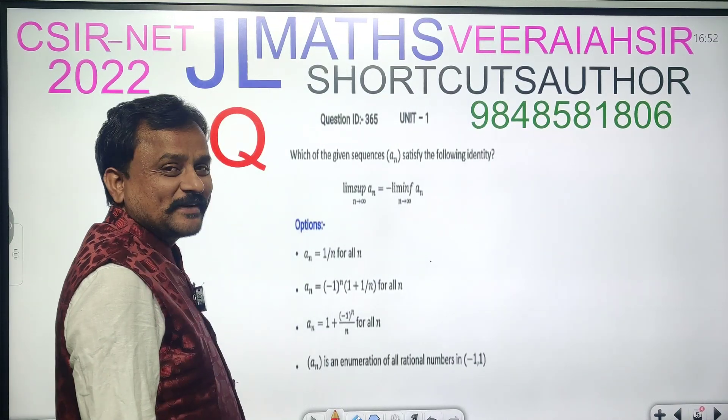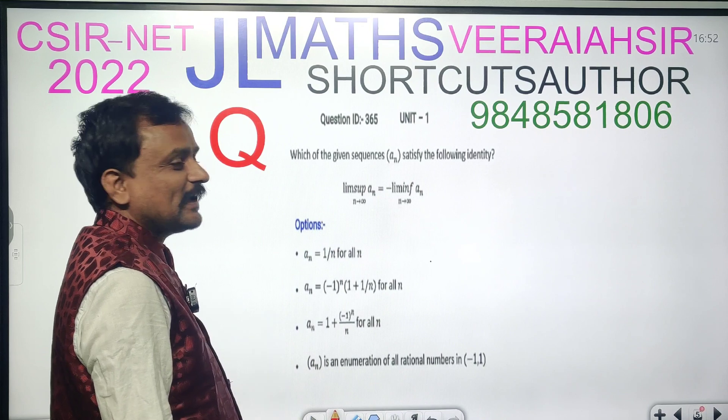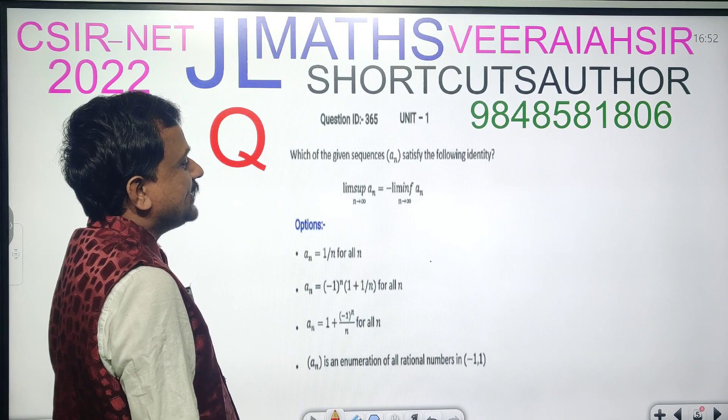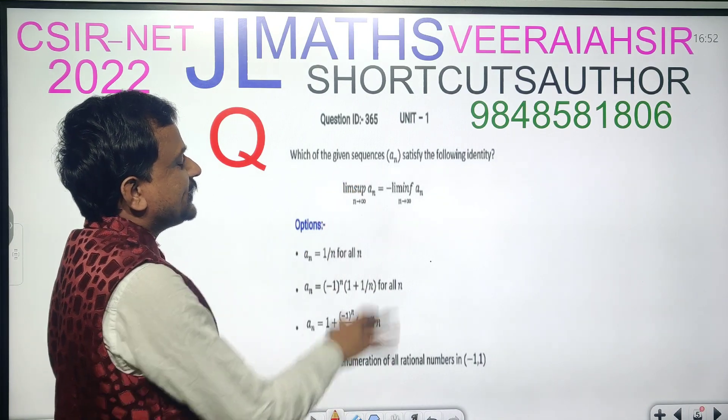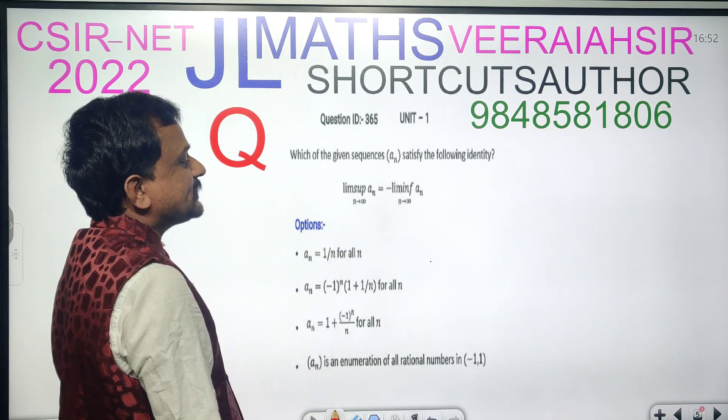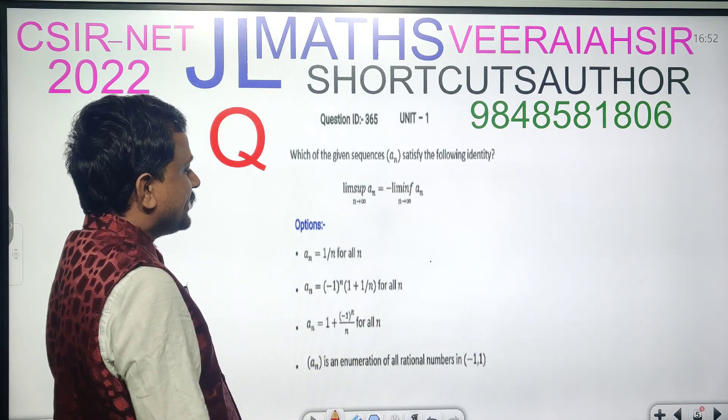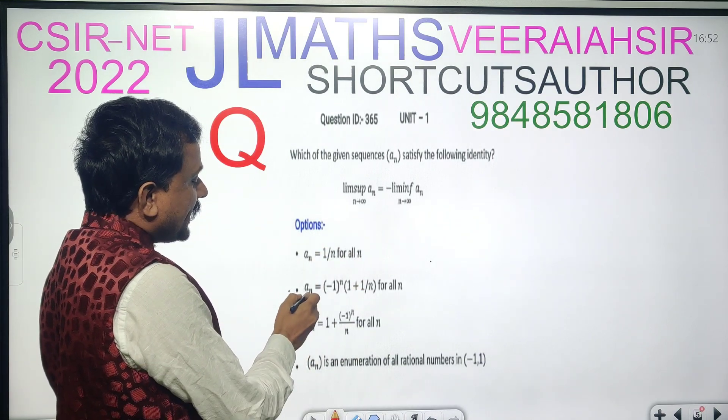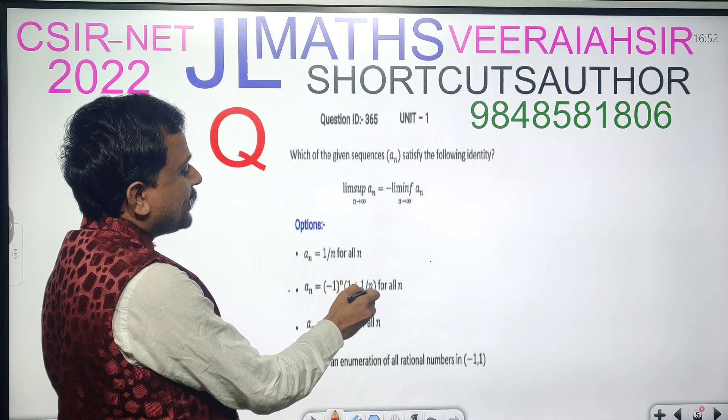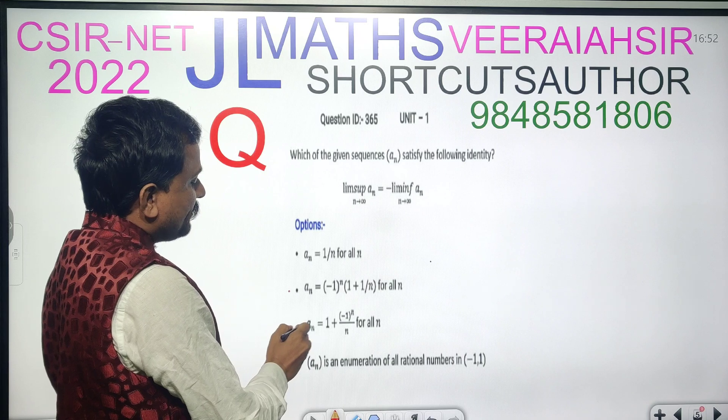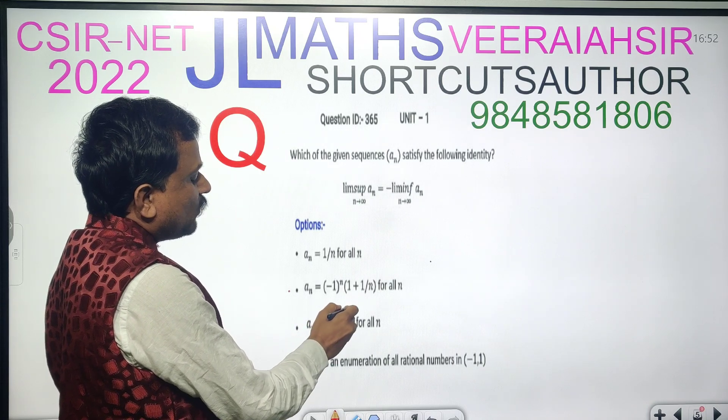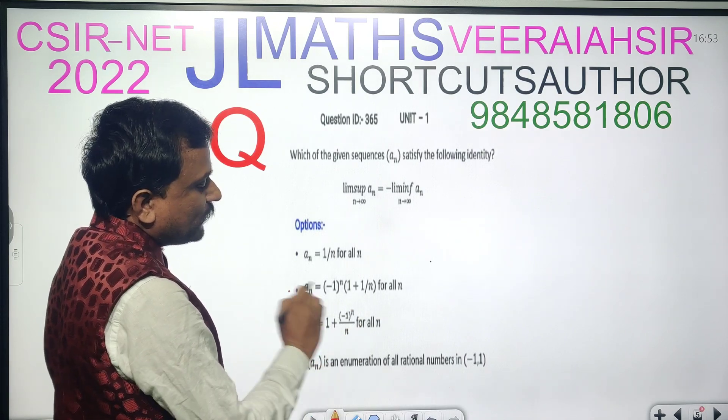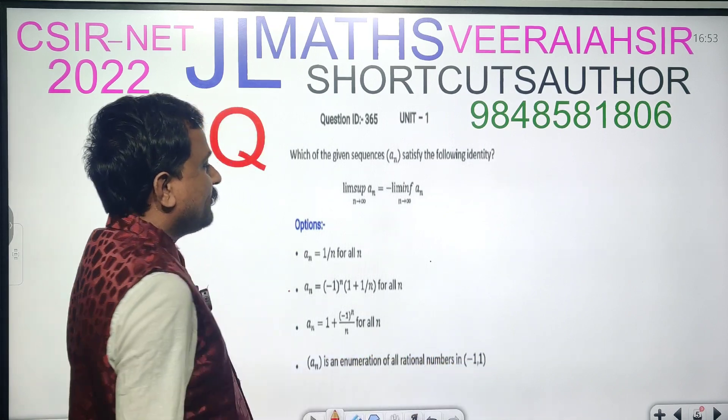Hi, Anderukhi Namaste, Neenumi Muthirini Vireya, Shortcut Sathar, Senior Columnist and Analyst. Which of the given sequence An satisfies the following identity: Limit supremum n to infinity An is equal minus Limit infimum n to infinity An. Option A, An is equal 1 by N for all N. Option B, An is equal minus 1 to the power N, 1 plus 1 by N for all N. Third option, An is equal 1 plus minus 1 to the power N by N for all N. Option D, An is an enumeration of all rational numbers in minus 1 comma 1.